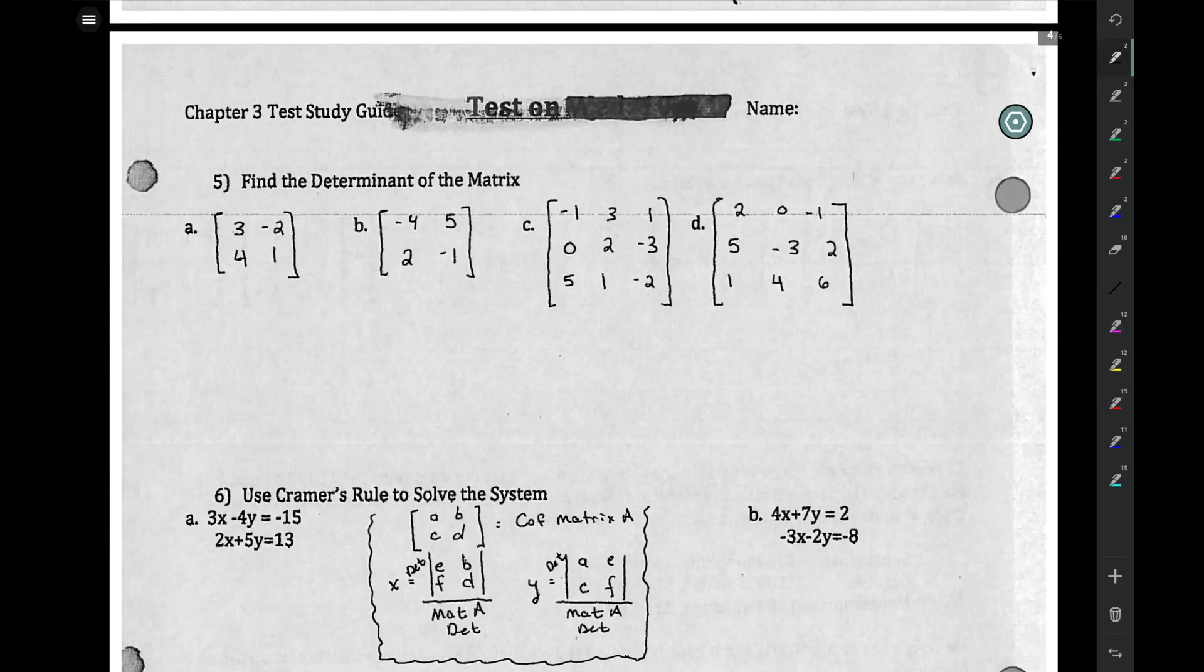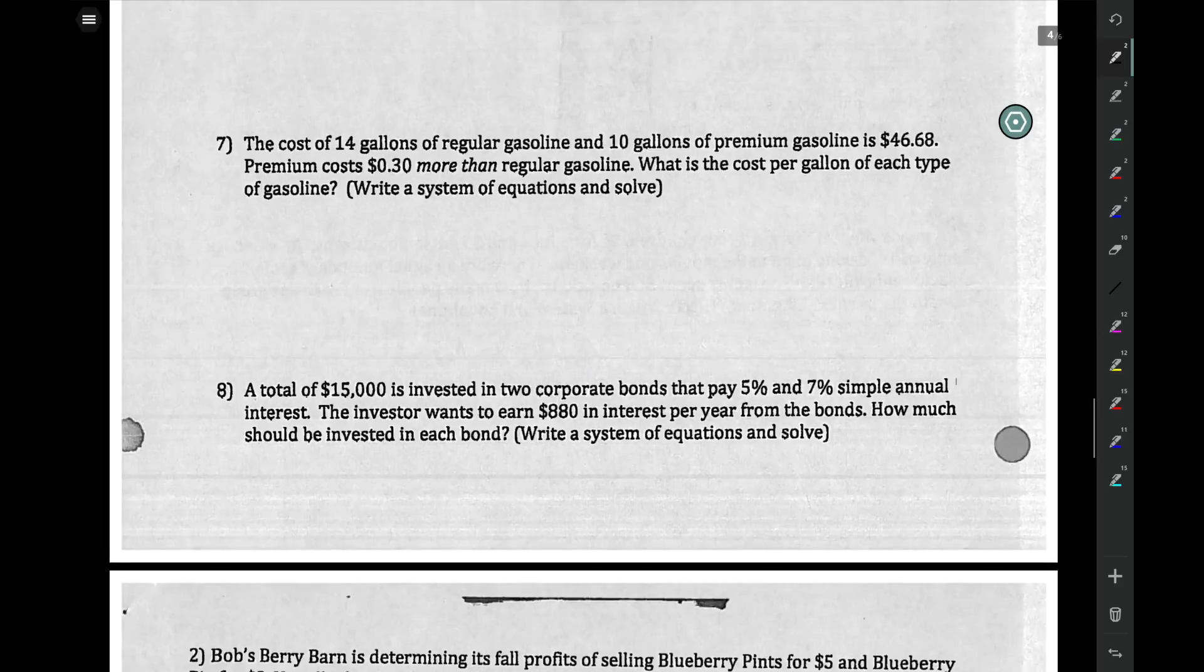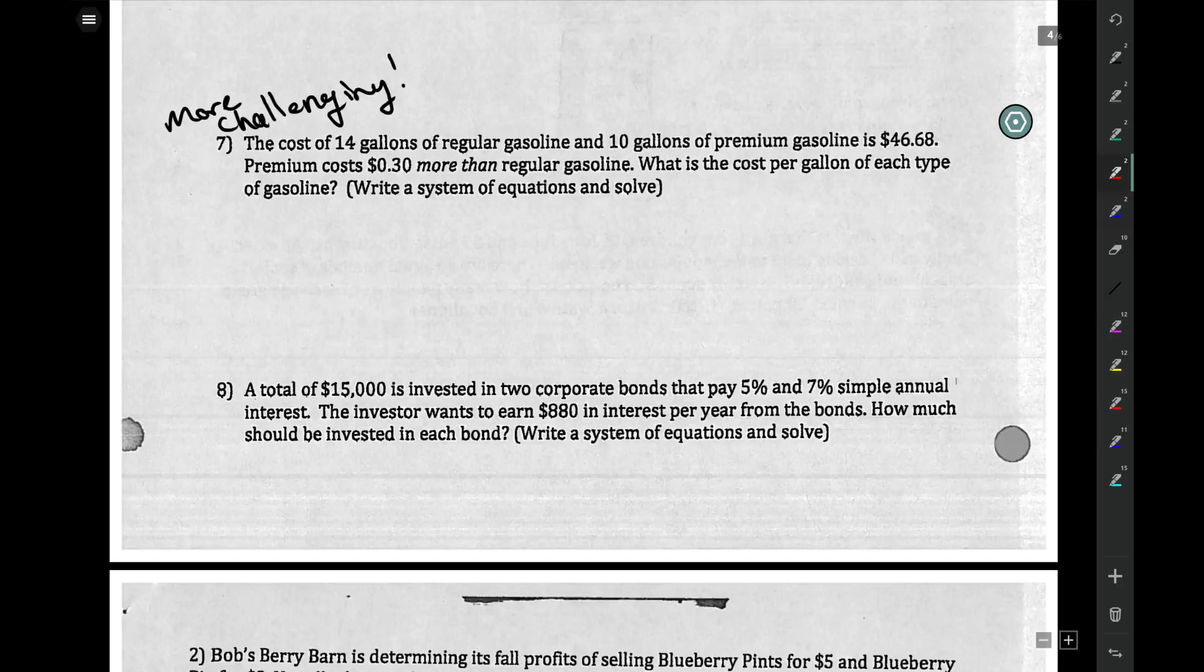The next part, finding determinants, that's all in your calculator. I believe I go through that earlier. These word problems, again, these are more challenging than what you'll actually encounter. But if you want to see them, I'll at least set them up for you. We have two things in this first one: gallons of regular gas and gallons of premium gas.